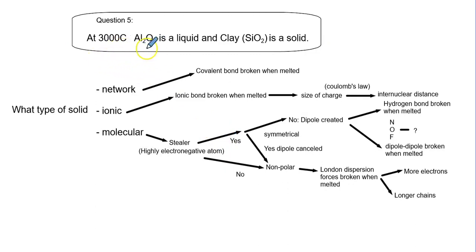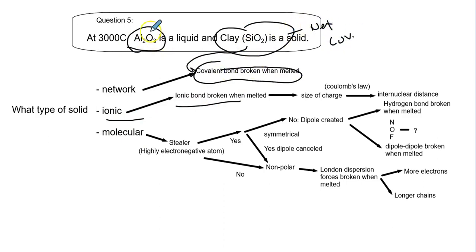At 3000, Al2O3 is a liquid but clay SiO2 is not. This one goes towards ionic compounds, but this guy is one of our unique guys that has an even higher melting point, and therefore covalent bonds are melted. This is a network covalent where this guy is ionic. Very unique.